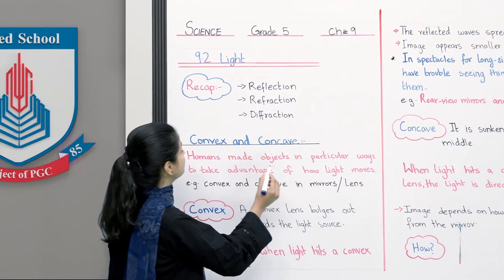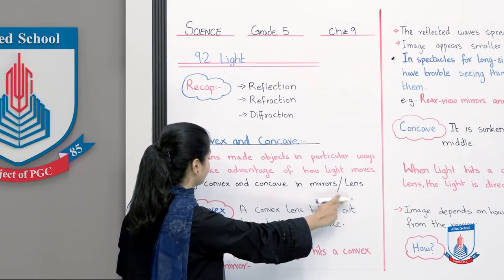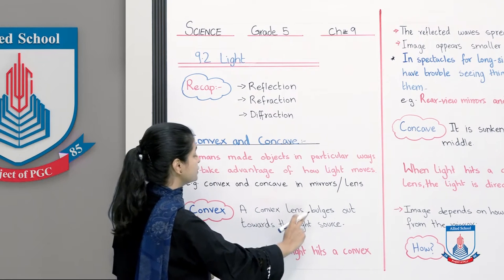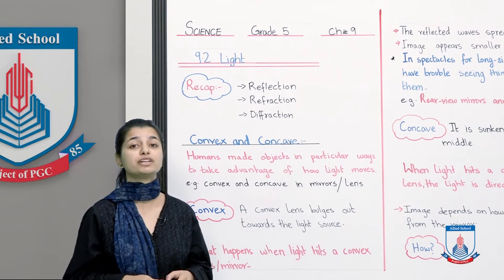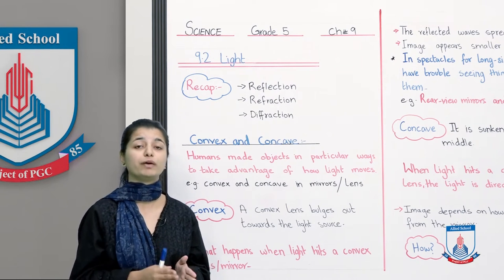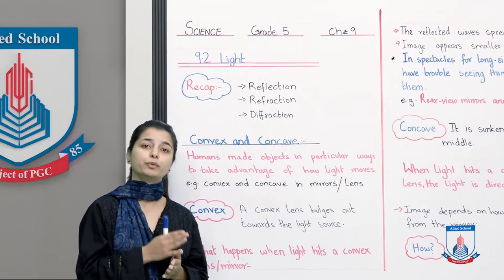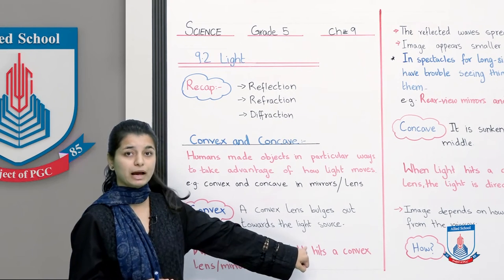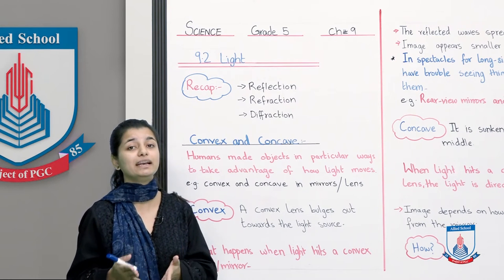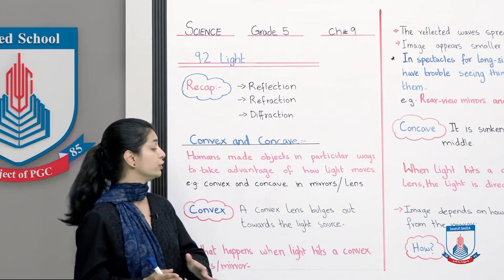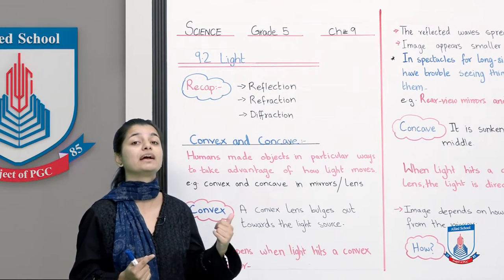Humans made objects in particular ways to take advantage of how light moves. Convex and concave in mirrors and lens. A convex lens bulges out towards the light source. We say that humans have created this way so that it can take advantage of the bending of light movement or different types of light reactions. So we say that the convex lens is bulged outwards. The light source could be sun, lamp, candle, anything that is providing light. So the light source ki taraf bulge outwards karta hai, that is a convex lens.